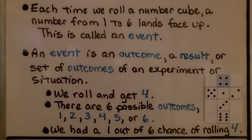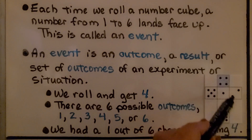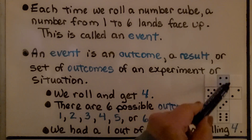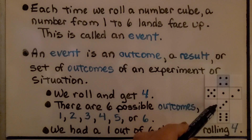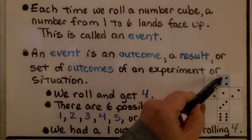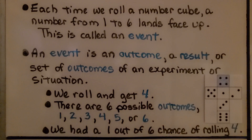We roll and get 4. There are 6 possible outcomes — we can get 1, 2, 3, 4, 5, or 6. We had a 1 out of 6 chance of rolling a 4. An unfolded 3D shape is called a net. We could cut this out and fold it to make a cube — a number cube. There's only one 4 on the number cube and there are 6 numbers, so we have a 1 out of 6 chance of rolling that 4.